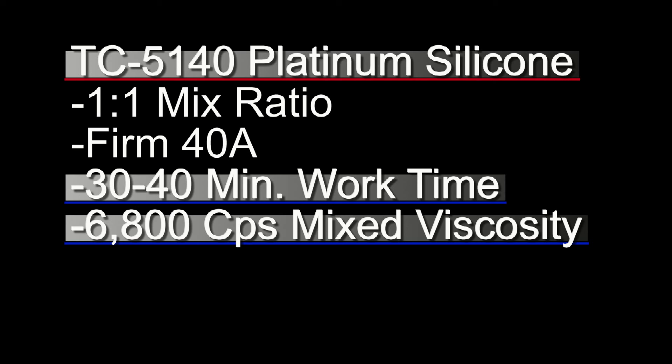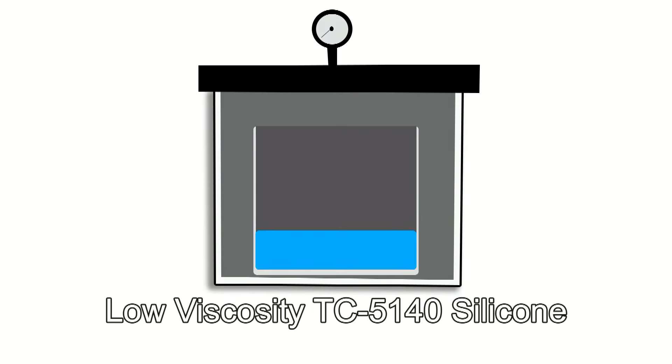Now the two properties we want to pay attention to here are the 30 to 40 minute working time and that 6800 centipoise mixed viscosity. And here's why those two things matter is depending on how fast we can pull a vacuum on our vacuum chamber, that will play into that working time. Because ideally, we want to be able to pull a full vacuum as fast as possible on that mix of silicone within the working time. Now the other thing is that mixed viscosity, 6800 centipoise, which is relatively low viscosity for a silicone. And that's important because that determines the size of the container.